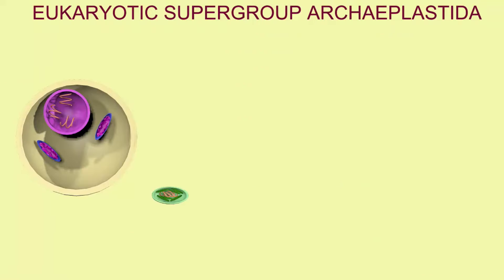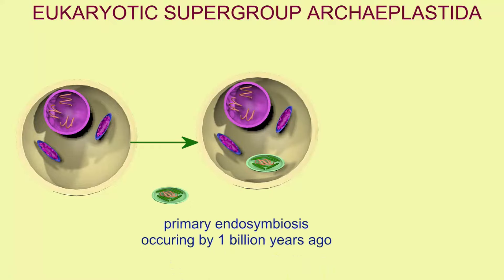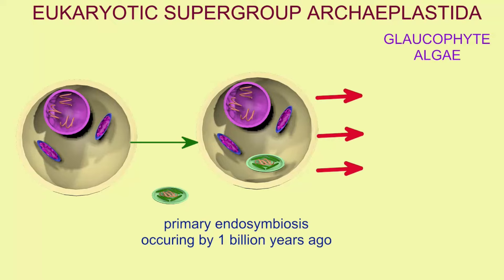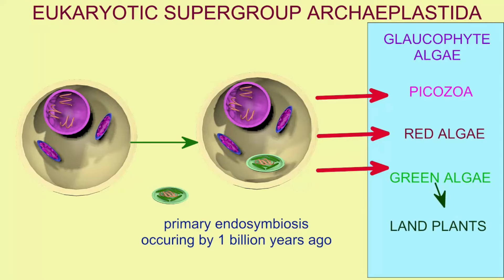This endosymbiosis was the origin of the eukaryotic supergroup Archaeplastida, which includes the modern groups of glaucophyte algae, the picazoans, the red algae, the green algae, and the land plants, which evolved from the green algae.